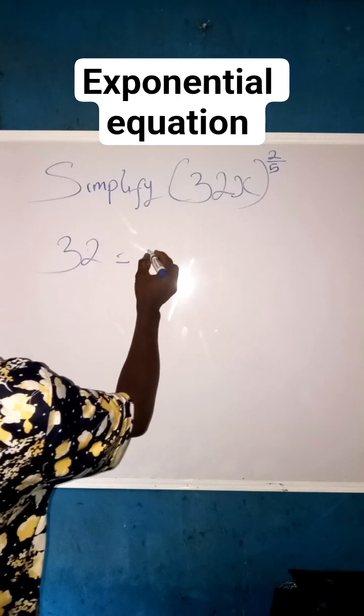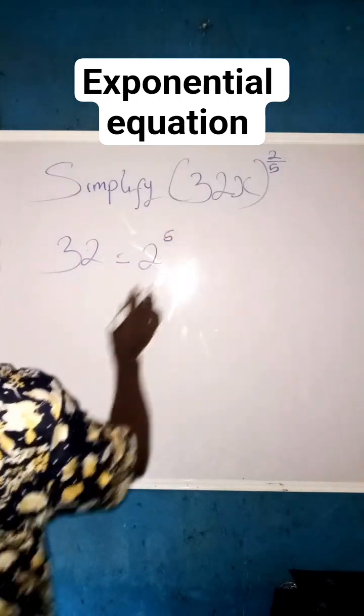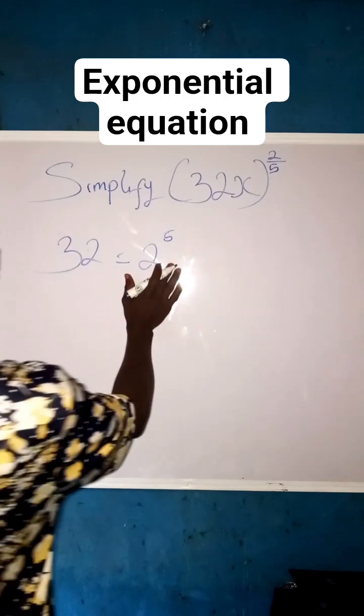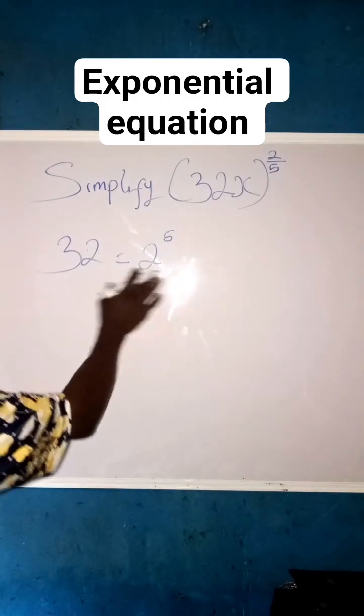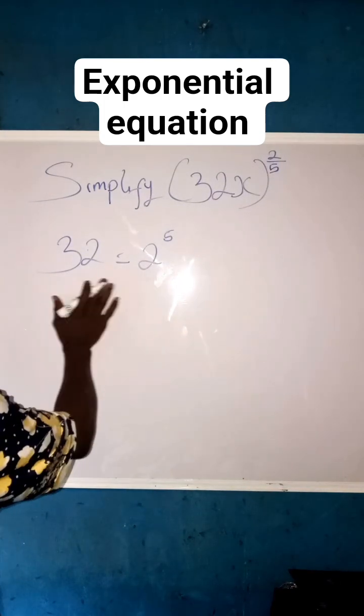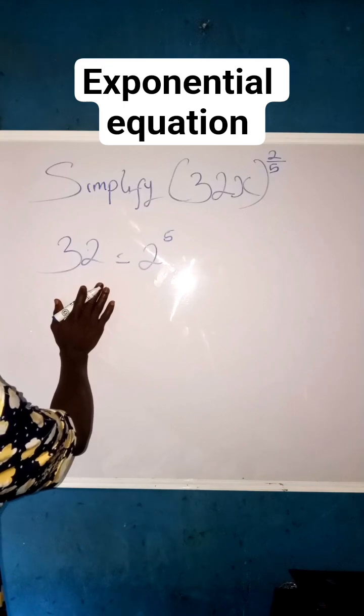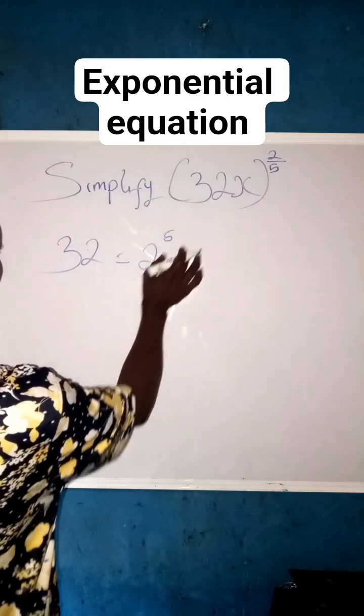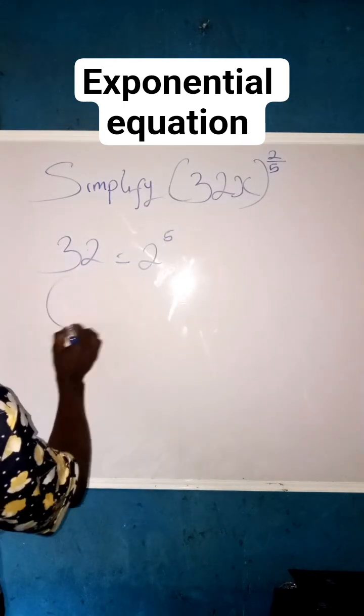32 can be written as 2 raised to power 5. Yes. So if 32 can be written as 2^5, instead of using 32, remember this is indices. We simplify. For 32 we use 2 raised to power 5. So that's what we are going to have in our bracket.